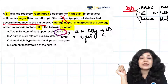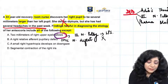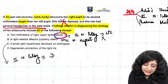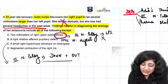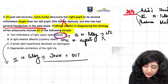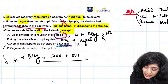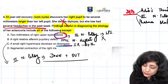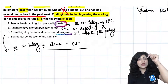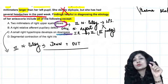Option C: a small right hypertropia develops on down gaze. This is a tricky one — when we have third nerve palsy the eye is typically down and out. But here they are asking specifically about down gaze. When the patient looks downward, the inferior rectus is used, and it is supplied by the third nerve. So in third nerve palsy, with the inferior rectus not acting, we can have a small amount of hypertropia on down gaze. So yes, this option is also correct.